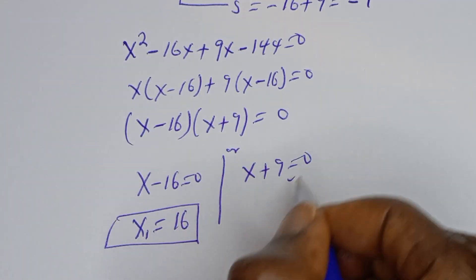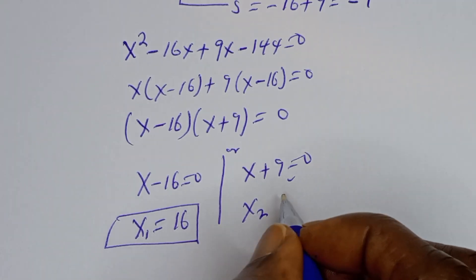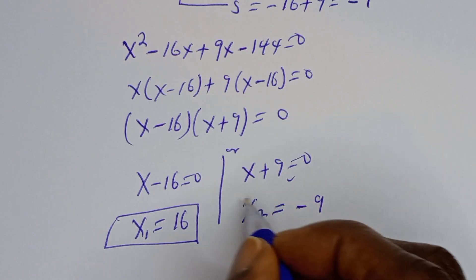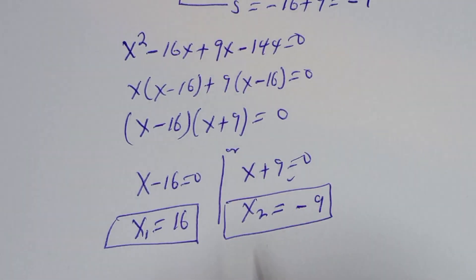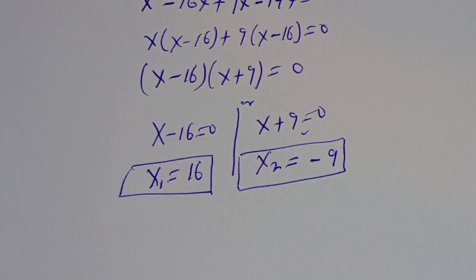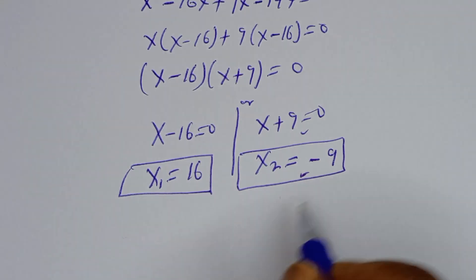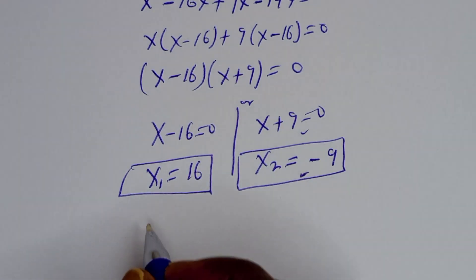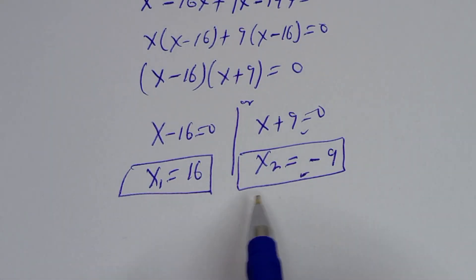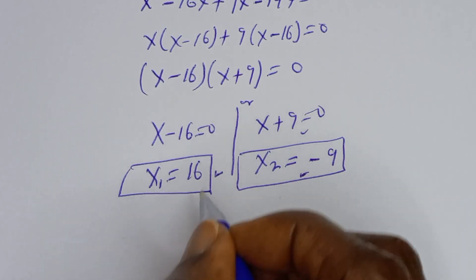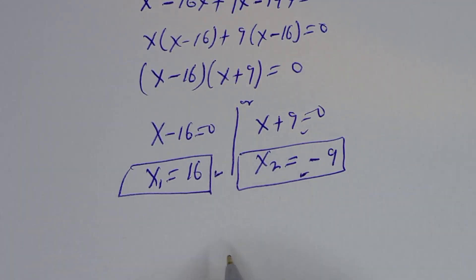From the second case, s₂ is equal to minus 9. These are the two values of s, but from the original radical equation, s₂ cannot equal minus 9 because this would put a negative value inside both radicals. Therefore, the only solution is s₁ which is equal to 16.